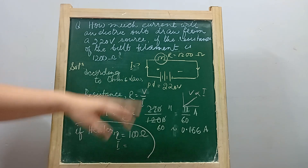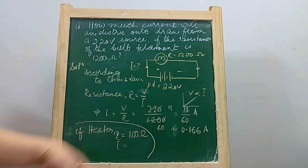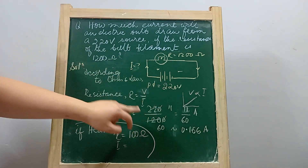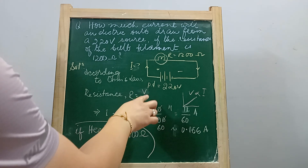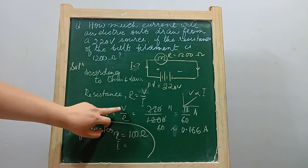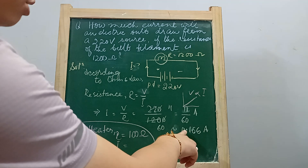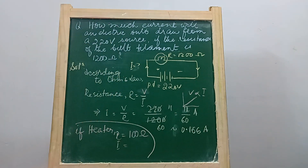The relationship is R = V / I at constant temperature. Since resistance and voltage are given, the current is I = V / R. Putting in the values: V = 220 volts and R = 1200 ohms. Simplifying, the answer is approximately 0.166 ampere. So not even one ampere will flow — only 0.166 ampere will be drawn by a bulb having 1200 ohms of resistance.